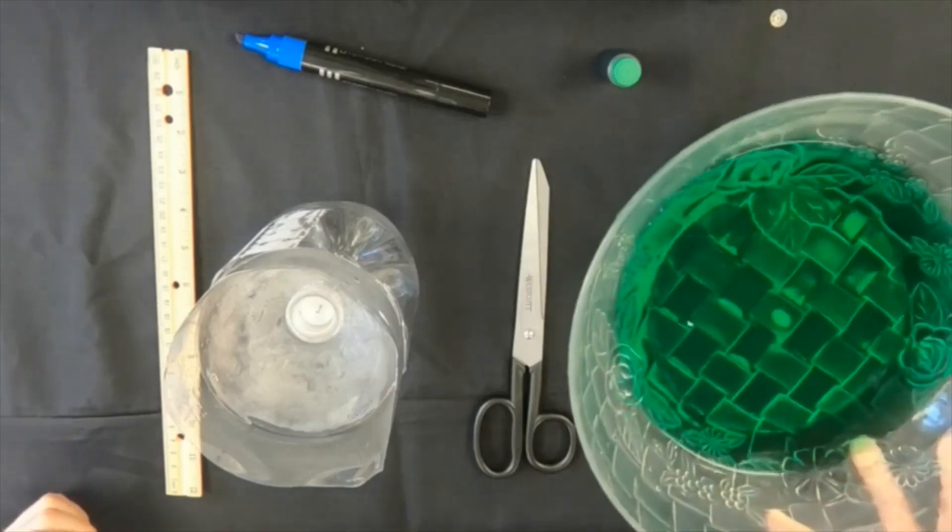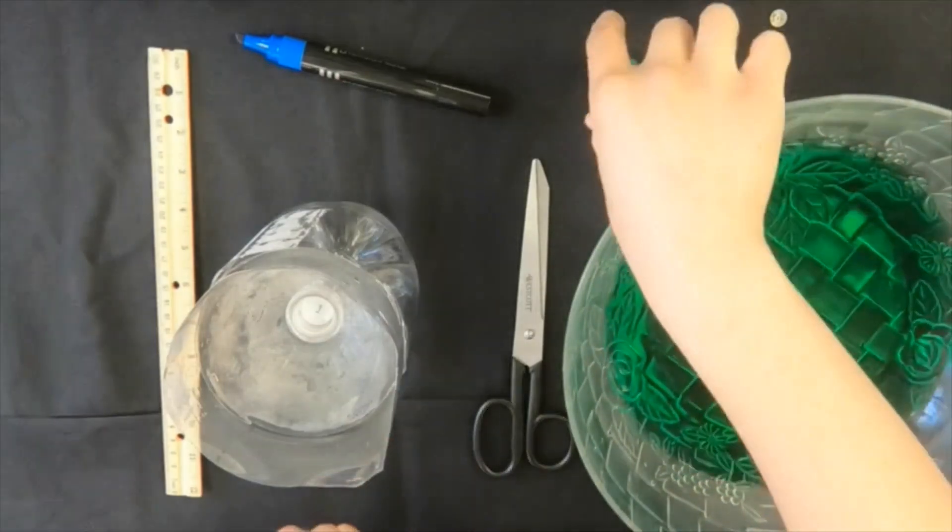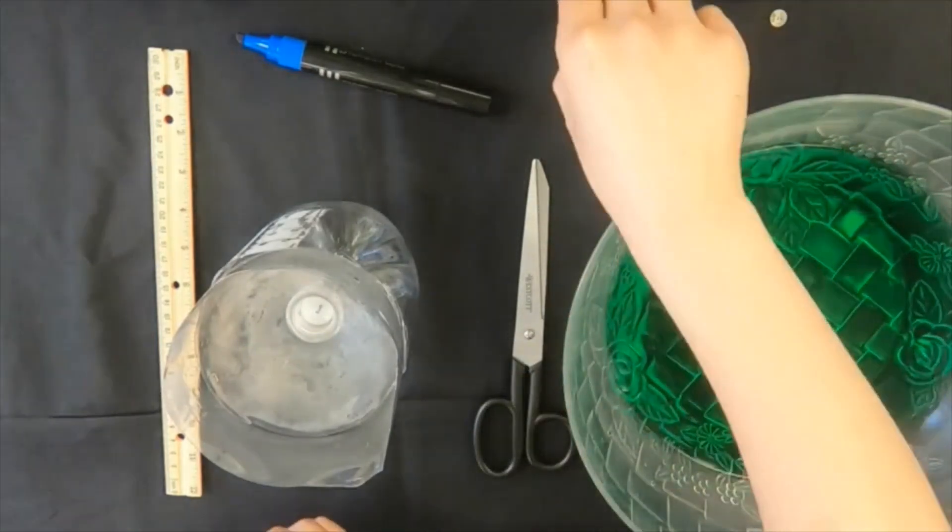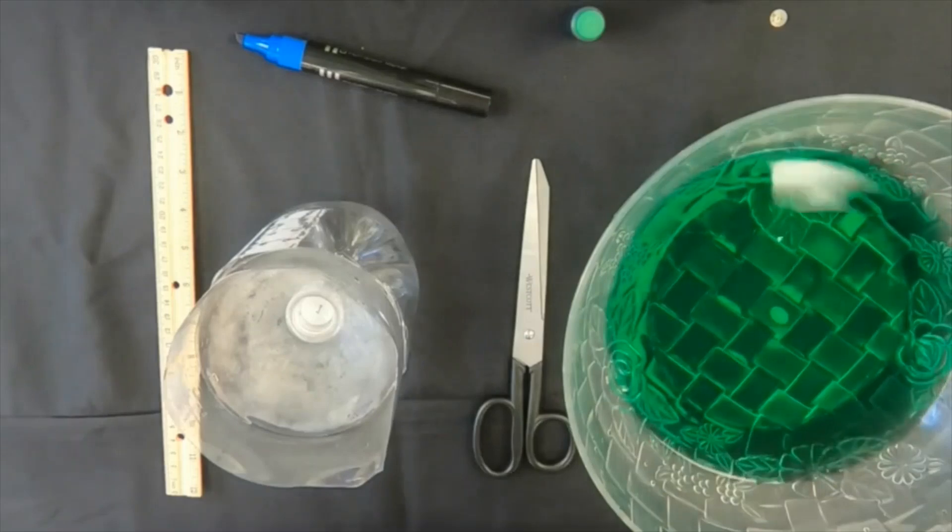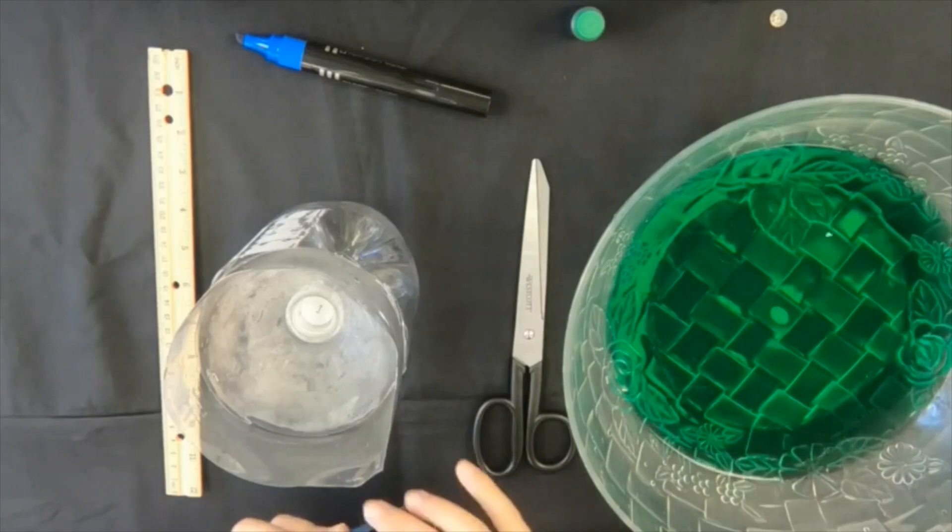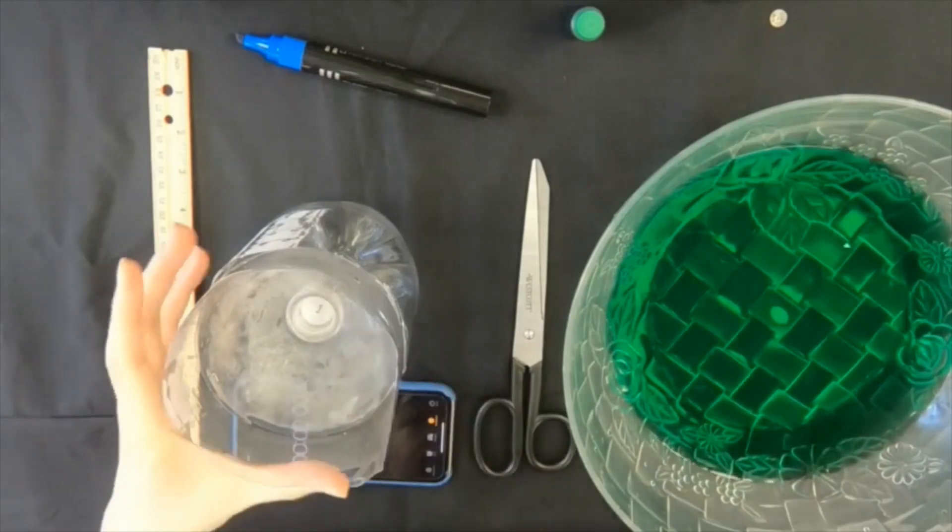Have some water ready. For a clearer visual effect, adding a few drops of food coloring into the water is recommended. Have your stopwatch ready. Pour the water into the top of the bottle and start the timing with a stopwatch.